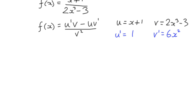The derivative, f dash x or f prime x, is stated by u dash, which is 1, multiplied by v, which is 2x cubed minus 3. So that's our first term. Subtract, and the second term is x plus 1 multiplied by v dash, which is 6x squared.